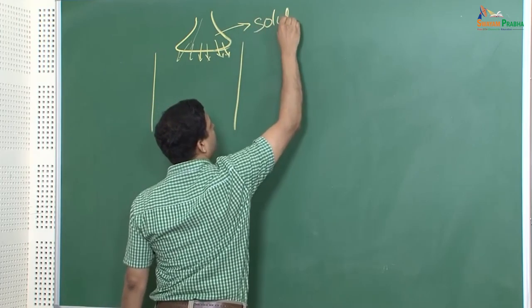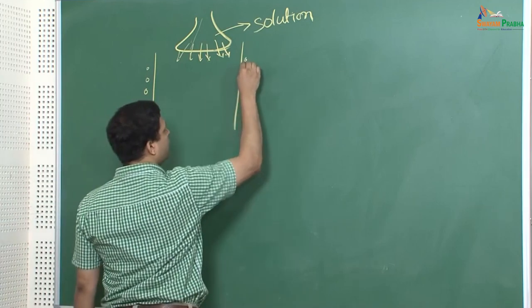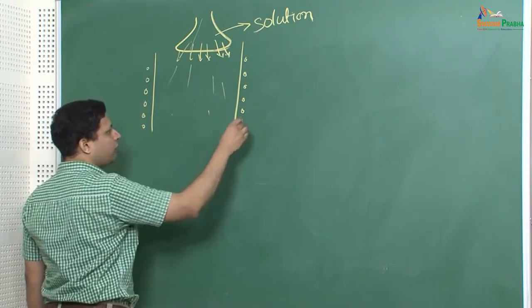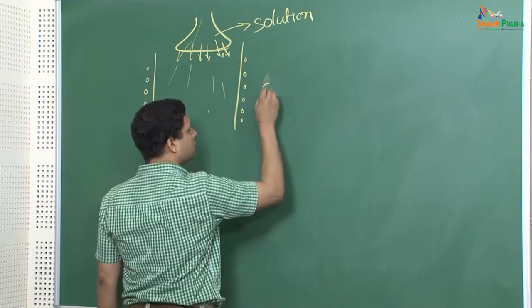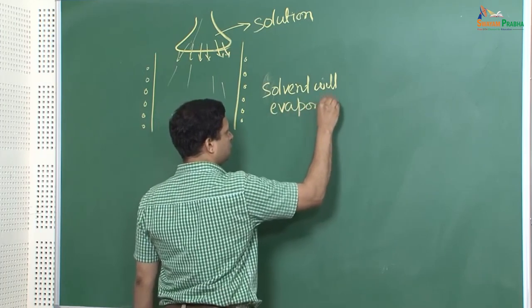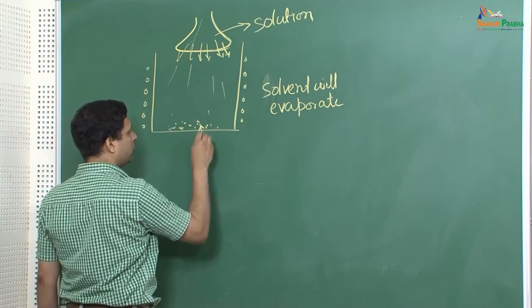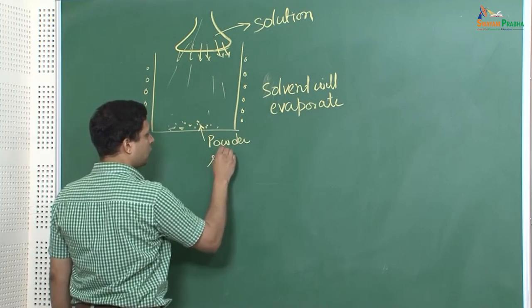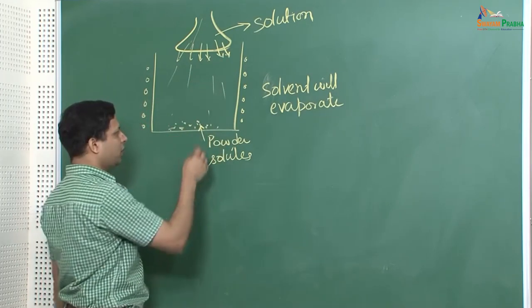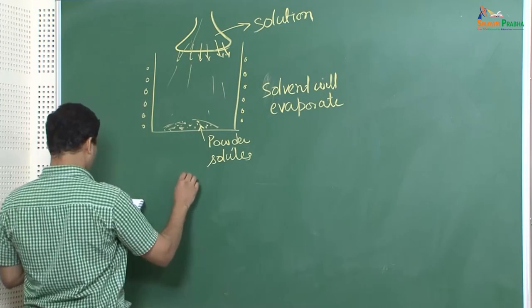This is a solution containing the material that you want to precipitate out. You have a heating zone through which the sprayed solution passes. Because of the heated zone, the solvent will evaporate and what you will get is the solute, or the powder. Since you are spraying very small droplets, once the liquid evaporates you are left with just the solute, which accumulates as powder. This is the technique for spray pyrolysis.